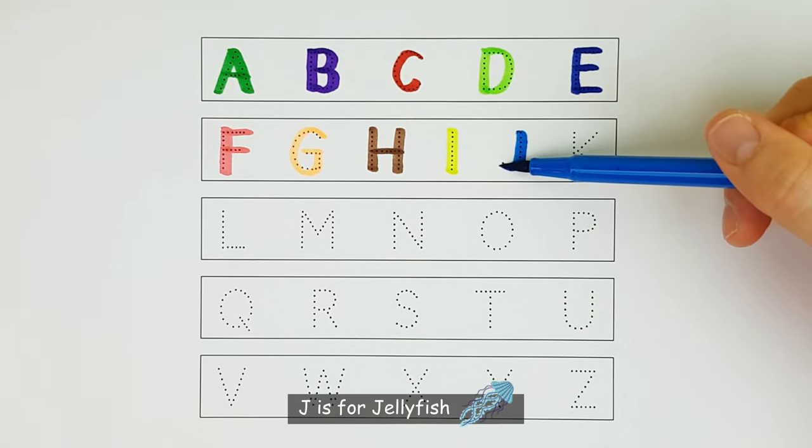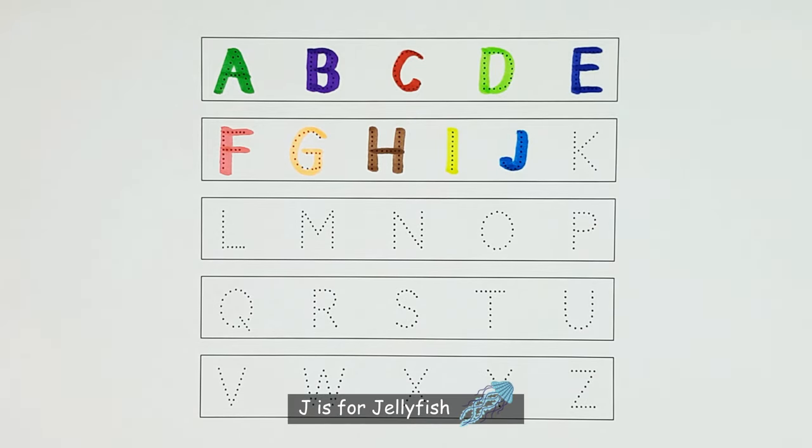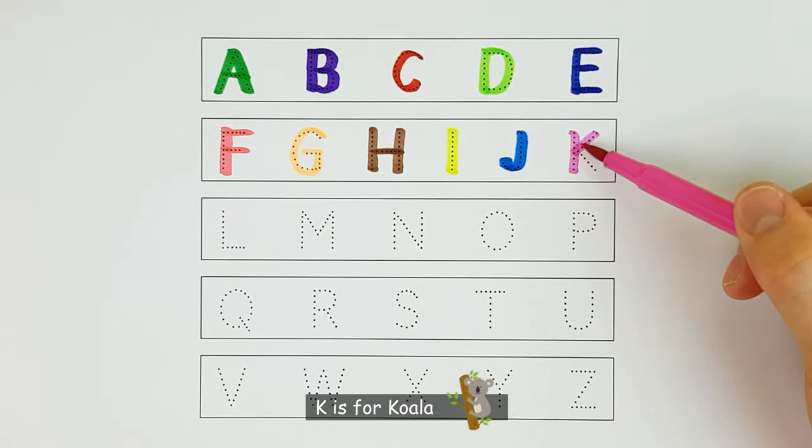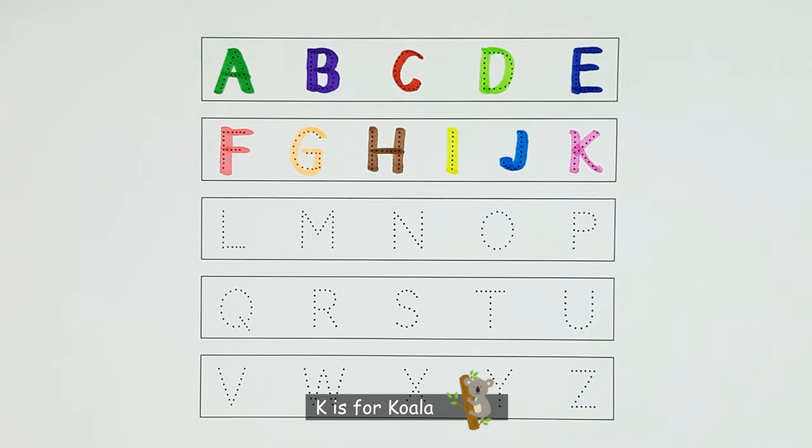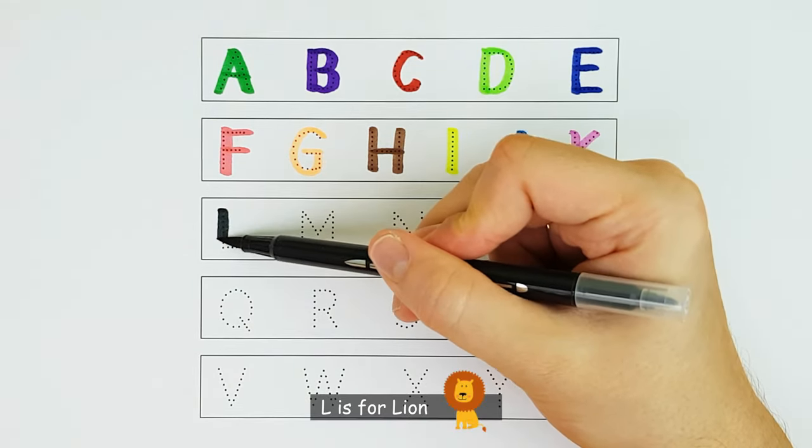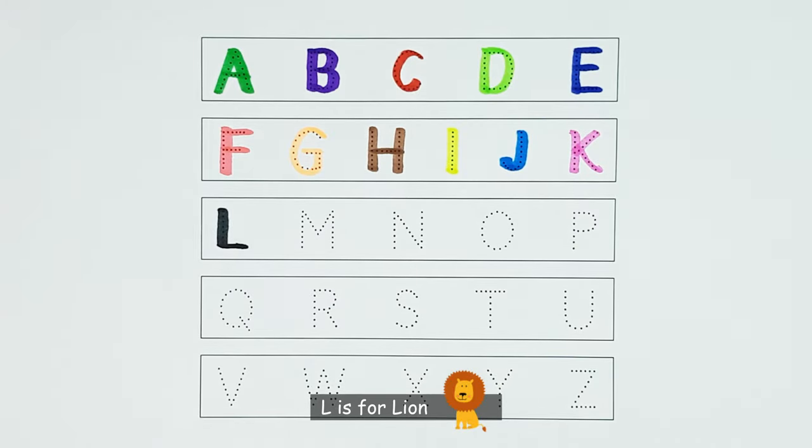J. J is for Jellyfish. J. K. K is for Koala. K. L. L is for Lion. L.